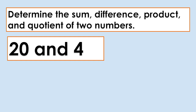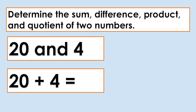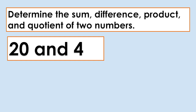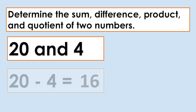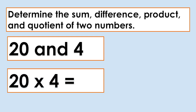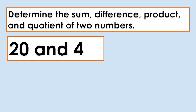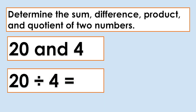Another: 20 and 4. Let us find the sum of 20 and 4: 20 plus 4 equals 24. Let us find the difference: 20 minus 4 equals 16. Let us find the product: 20 times 4 equals 80. Let us find the quotient: 20 divided by 4 equals 5.